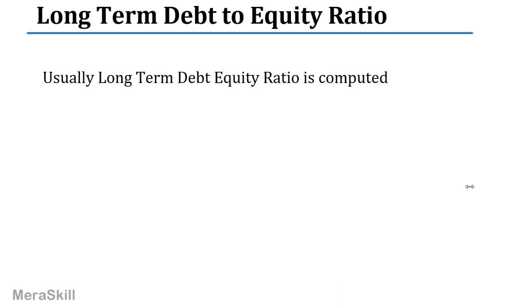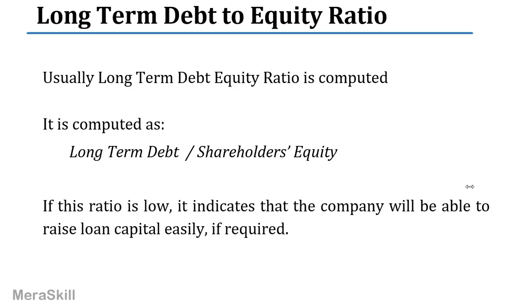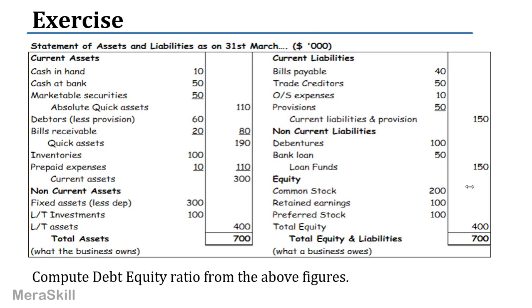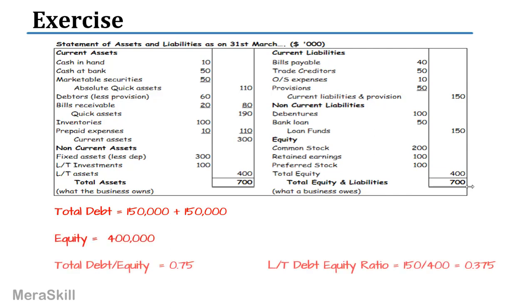Next, you have the long-term debt to equity ratio — long-term debt divided by shareholders' equity. If this ratio is low, it indicates that the company will be able to raise loans easily if required. Computing from the same balance sheet: the debt equity ratio gives 3 by 4, or 0.75. For only the long-term debt equity ratio, you take only long-term debt — 150 — divided by equity, also giving 0.75.